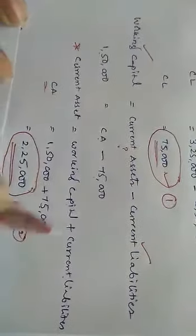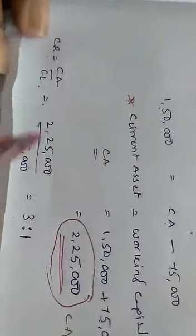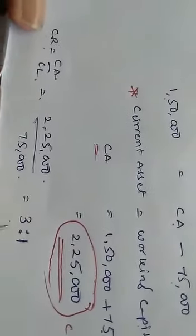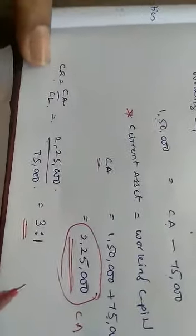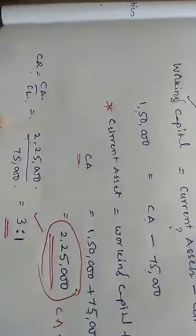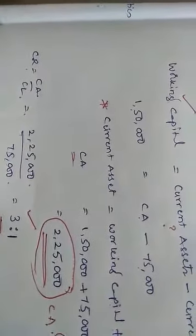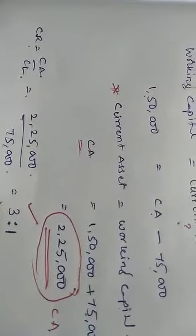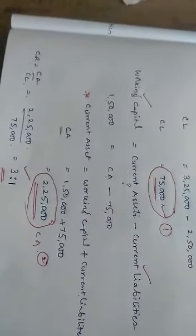Current ratio equals current assets divided by current liabilities, which is 2,25,000 divided by 75,000. The answer is 3 is to 1. The ideal ratio is 2 is to 1, but this is showing more, so this is good. Practice more problems based on these sums. Wherever new formulas are introduced, practice more problems based on them. Thank you.